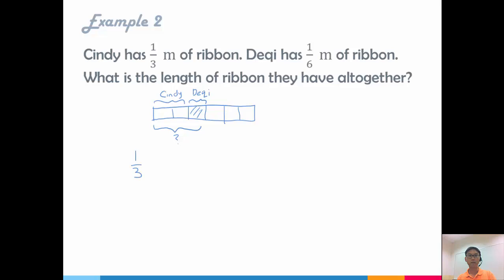So 1 third plus 1 sixth. Change 3 to 6 by multiplying 2. Multiply 2 at the numerator. This becomes 2 over 6. And I add through my 1 sixth. And this will give me 3 out of 6. Add my numerator, denominator stays the same. Do I stop here? No, I don't because I can simplify. So this I can divide by 3, this I can divide by 3. And that gives me half.